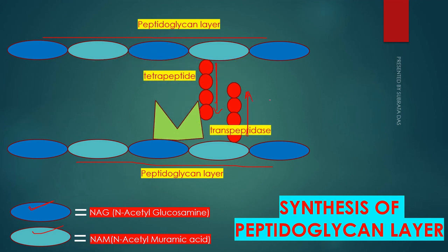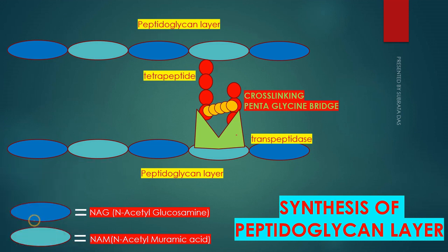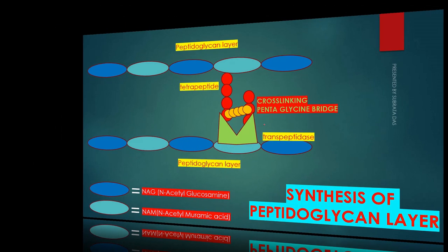These two tetrapeptides will cross-link to each other by the enzyme known as transpeptidase. This transpeptidase enzyme cross-links two tetrapeptides using the pentaglycine molecule, which provides the cross-linking via a pentaglycine bridge. This gives a rigid structure to the peptidoglycan layer, and to the cell wall.